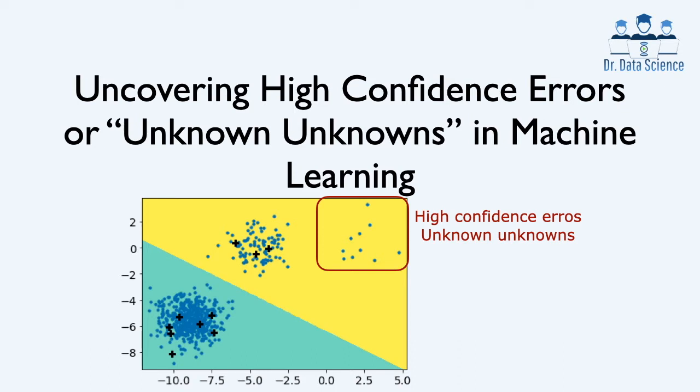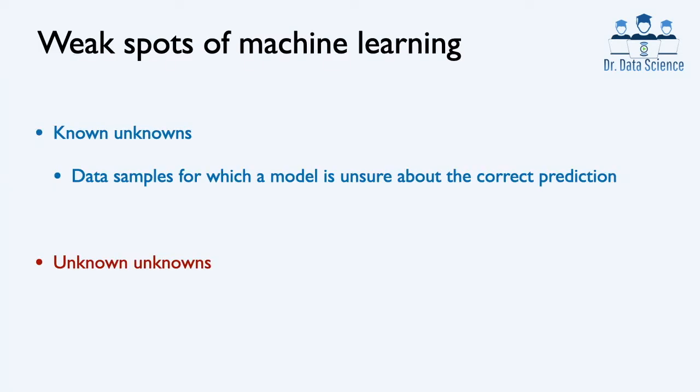Before we get started, if you are not subscribed, please consider joining the Dr. Data Science team so you don't miss future videos. In general, there are two types of weak spots of machine learning models. The first one is called known unknowns, which refers to examples or data samples for which a model is unsure about its prediction.